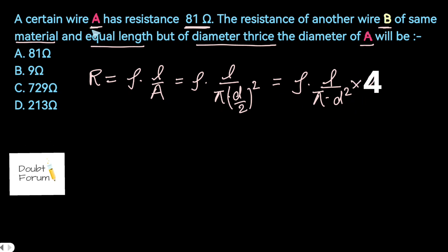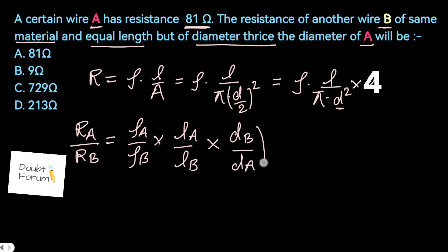Now we can compare the resistance of wire A with wire B. So this formula would become R_A upon R_B. This would become rho_A upon rho_B into L_A upon L_B. This diameter is in the denominator, so we have to write in the inverse form. So first we will be writing diameter of wire B divided by diameter of wire A and then we will take the square. The constant term we will not write here because it will get cancelled.